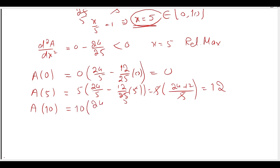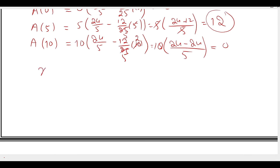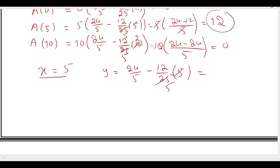For x equal to 10: 24/5 minus 12/25 times 10. The 5 gives 25, 2 times 24 gives 0 by anything is 0, so 0 times 10 is 0. The maximum value counts — it is 12 — and it occurs when x is equal to 5. Now x equals 5, y equals 24/5 minus 12/25 times 5. The answer: 24 minus 12 gives 12/5. So we maximize the area at x equal to 5 and y equal to 12/5.